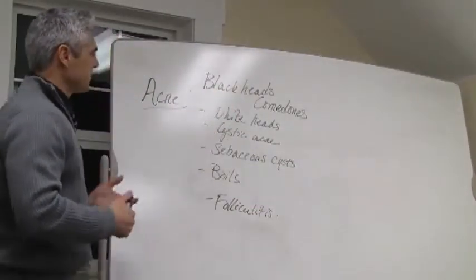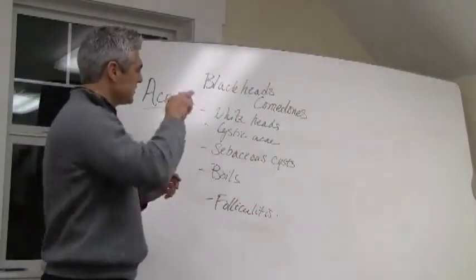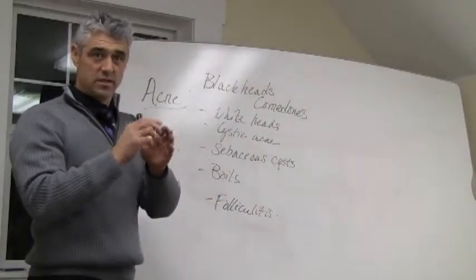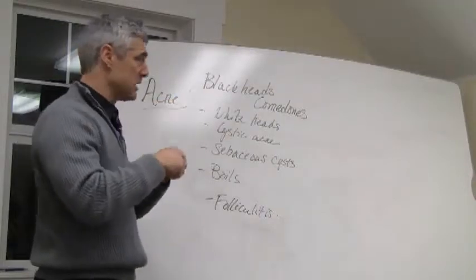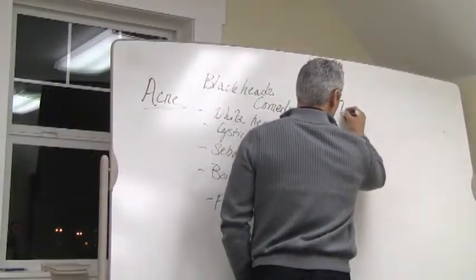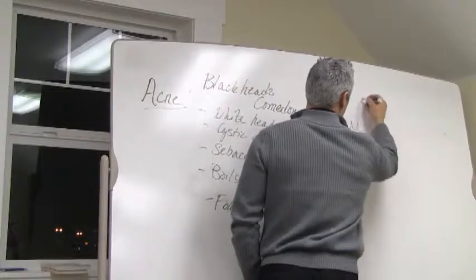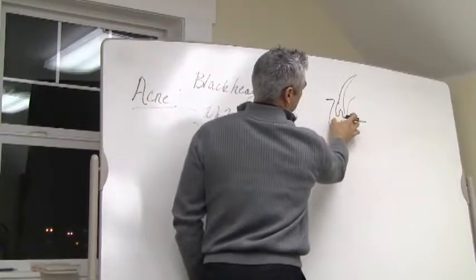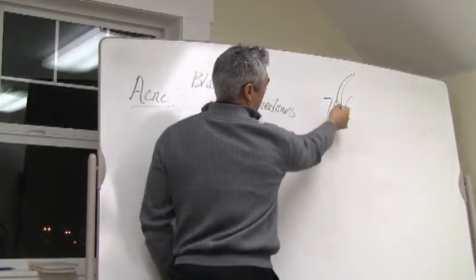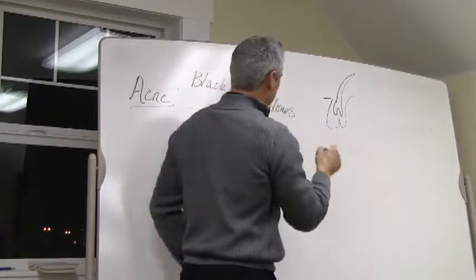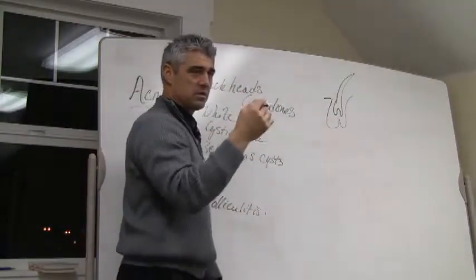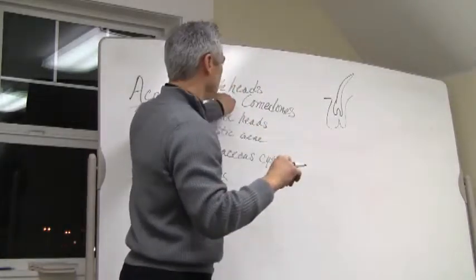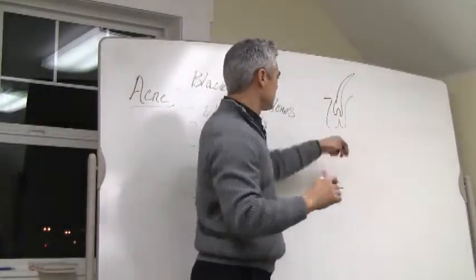A lot of us are familiar with blackheads. Those are the ones that are squeezed and the little squiggler comes out and it's black because this sebaceous gland, the oil gland's been blocked up. So that blocking of the pore actually creates then a little place for this blackhead to form. A lot of time it will form along the hair follicle.